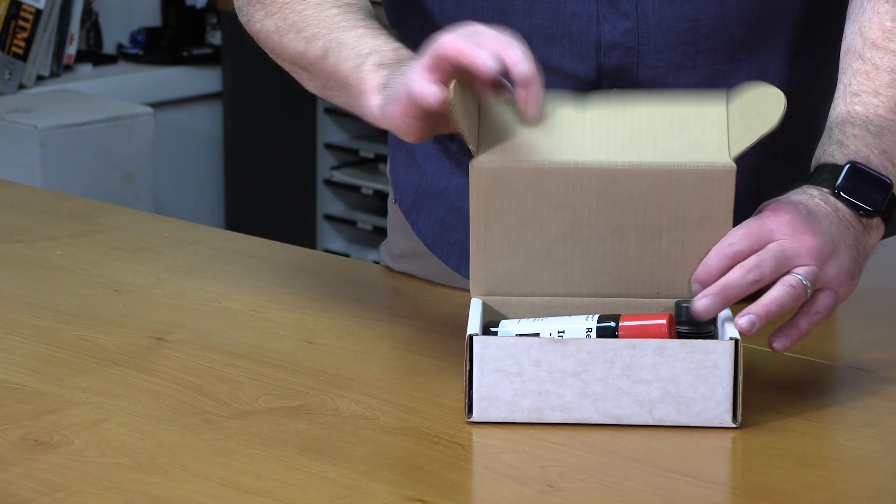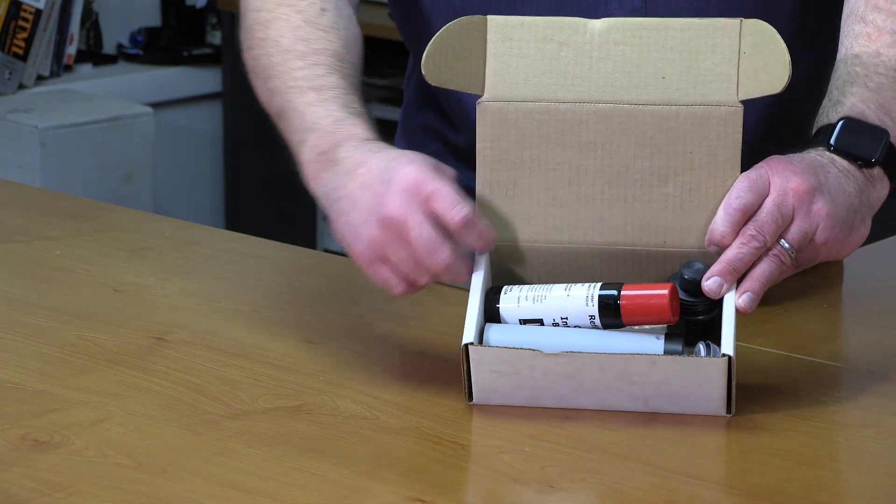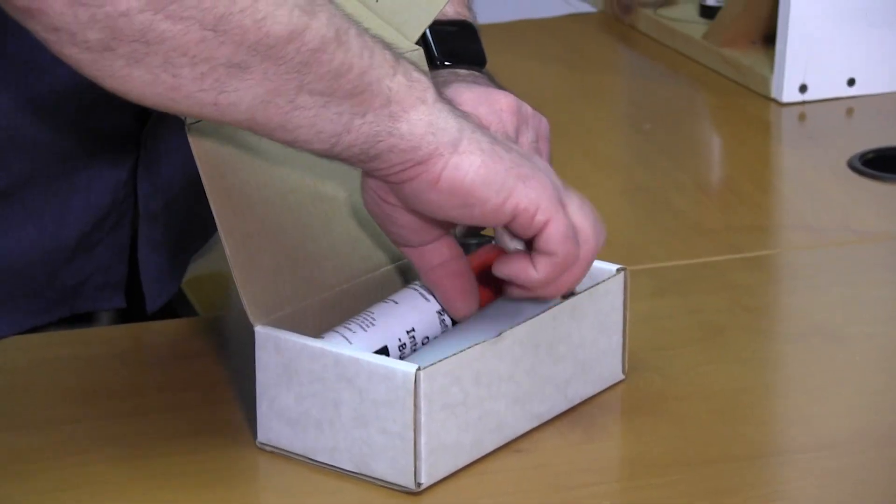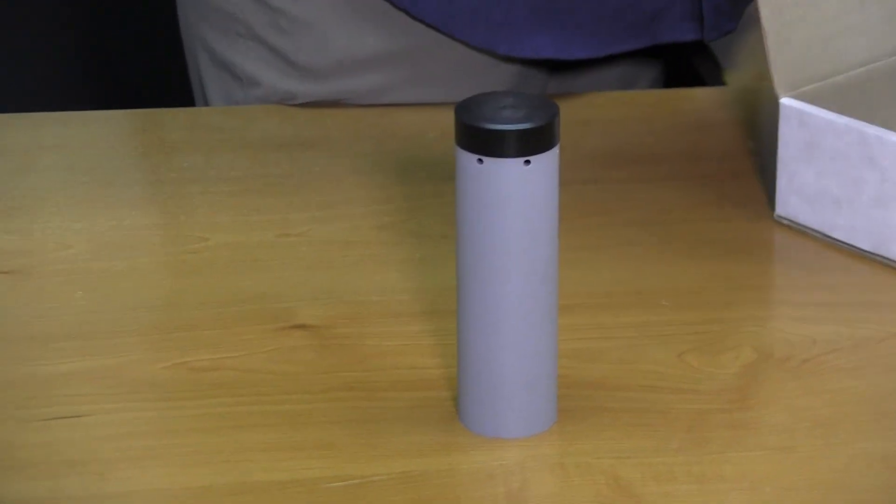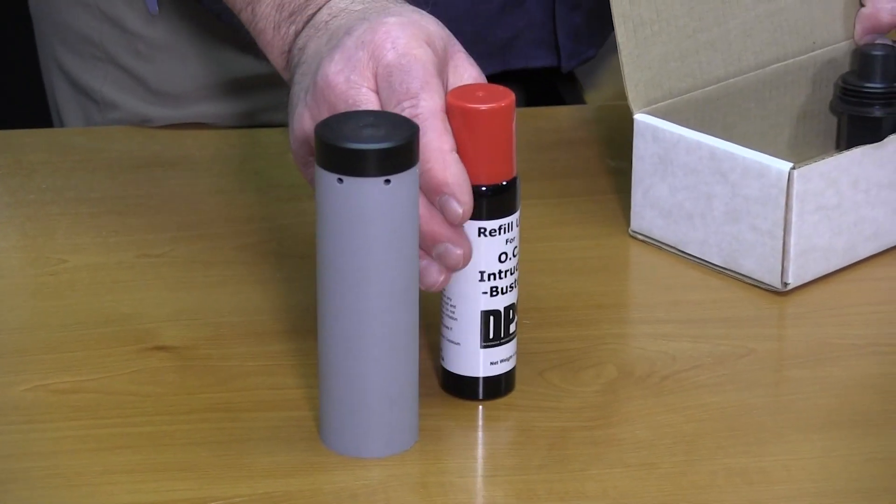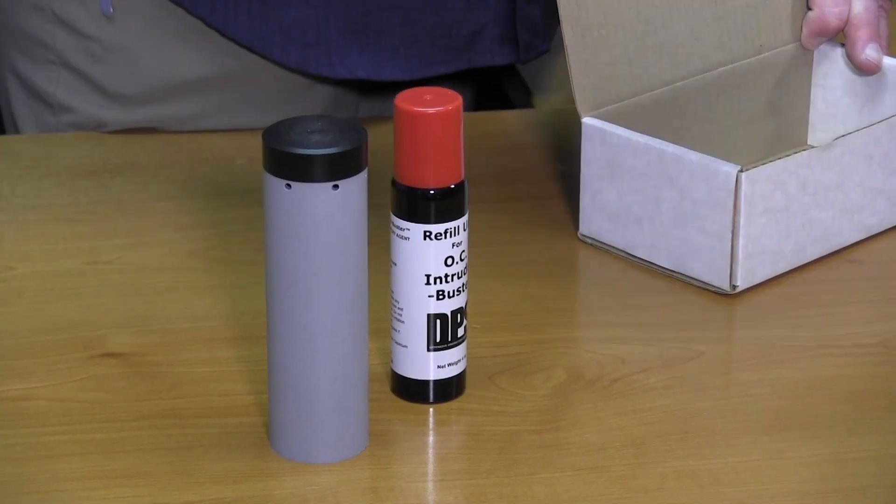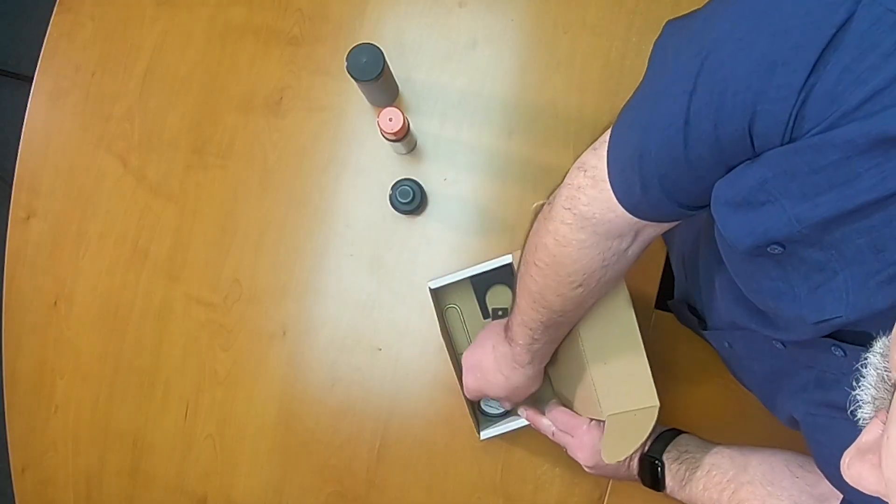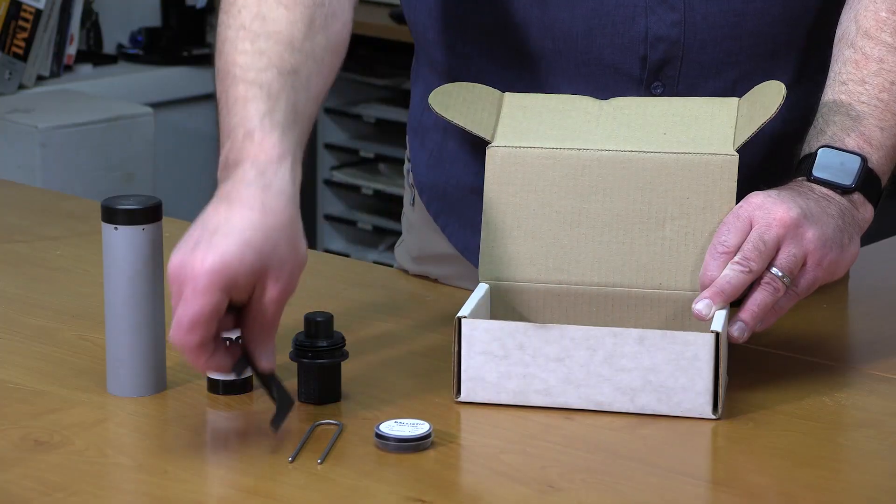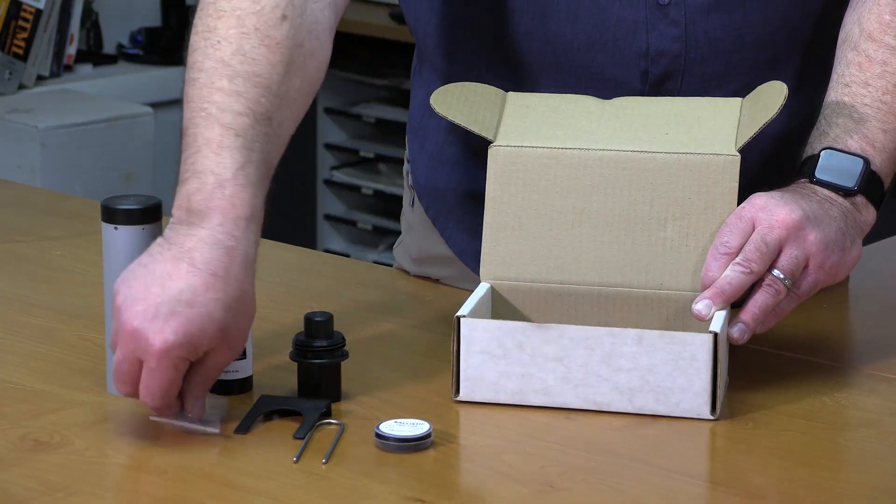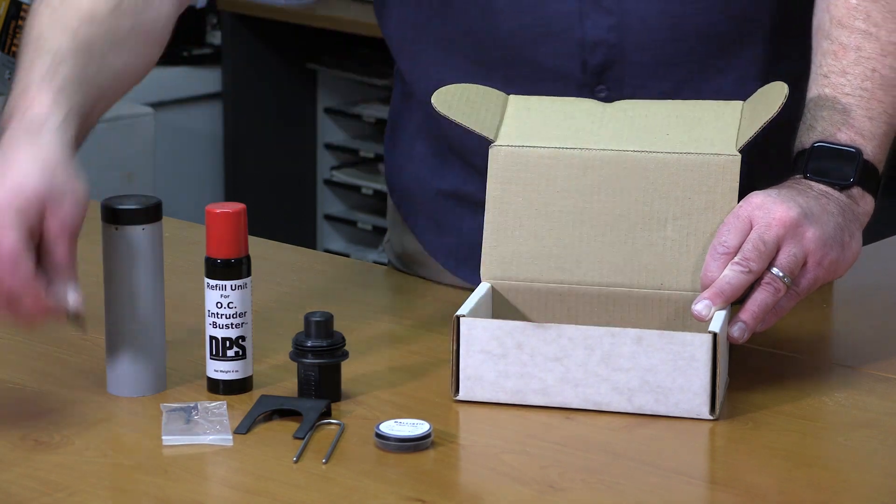The OC Intruder Buster Kit comes with everything you need to get started. First is the OC Intruder Buster housing. Next we have the DPS OC Refill, the Activator, Ballistic Tripline, Safety Pin, Wall Mount, Mounting Screws, and the Sear.